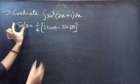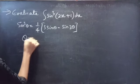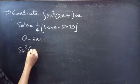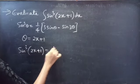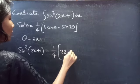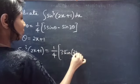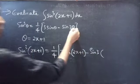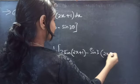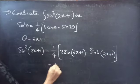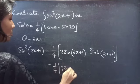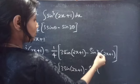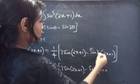Comparing the integrand with sin³θ, we get sin³(2x+1) equals 1/4 into [3 sin(2x+1) minus sin(3 times (2x+1))]. This becomes 1/4 into [3 sin(2x+1) minus sin(6x+3)].